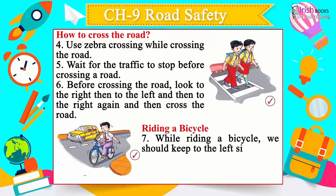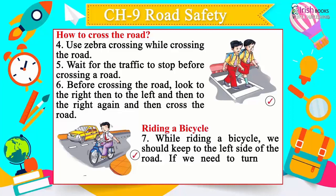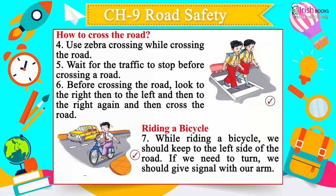Riding a bicycle. 7. While riding a bicycle, we should keep to the left side of the road. If we need to turn, we should give a signal with our arm.